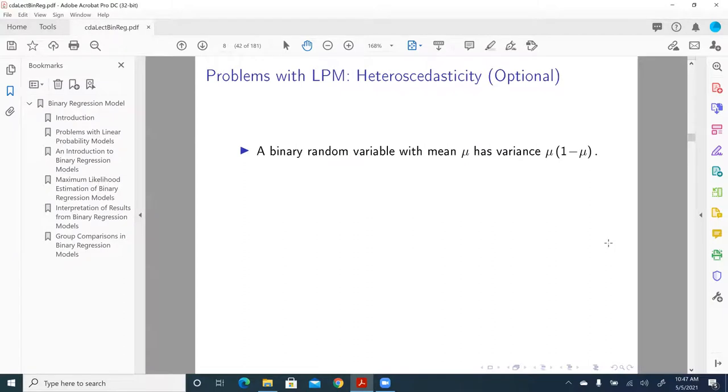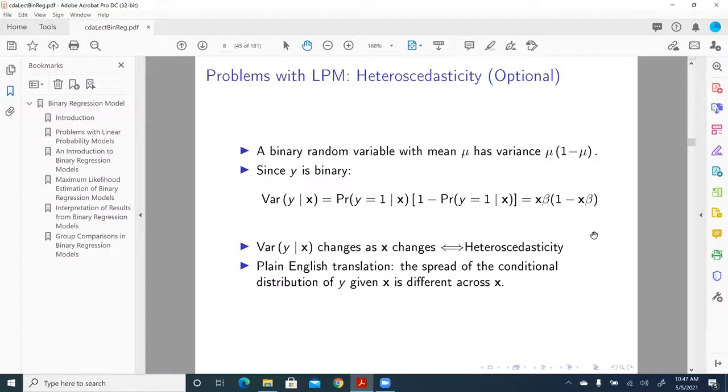We have a list of problems and limitations by applying linear probability model to binary response variable. First is this problem called heteroskedasticity. Basically, it's the problem that I just described in that graph. The error terms given X level do not spread out equally across different levels of X's.